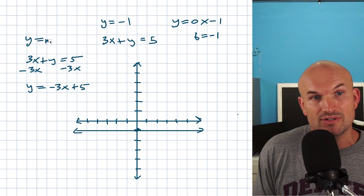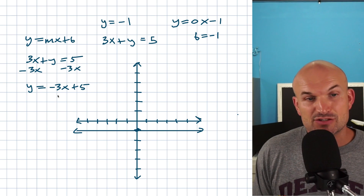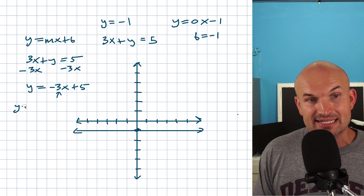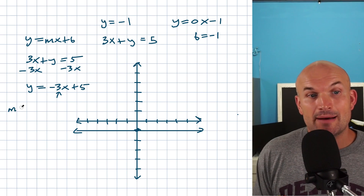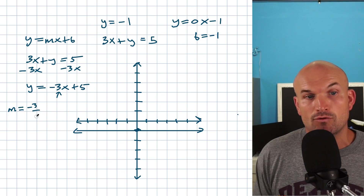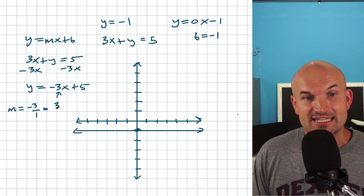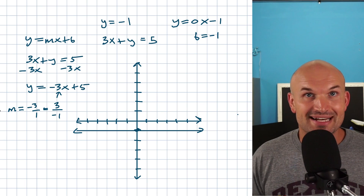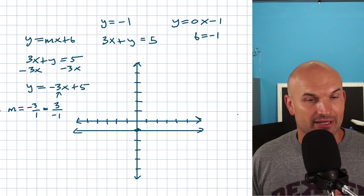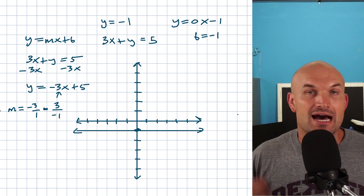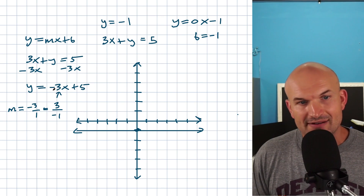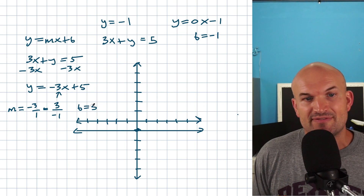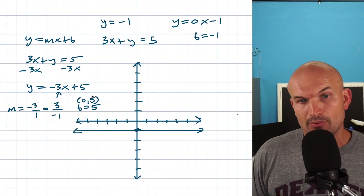Now it's in the form y equals mx plus b. This negative 3 represents our slope, which I can rewrite as a fraction: m equals negative 3 over 1. You could also rewrite it as 3 over negative 1 — just don't make both top and bottom negative, because that would create a positive slope, which we don't have. We have a negative slope. Our y-intercept is 5, which can be written as the coordinate point (0, 5).